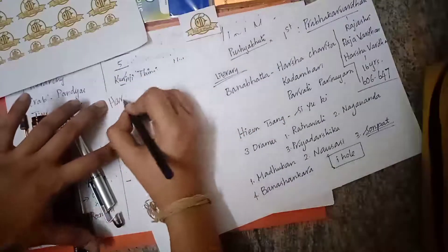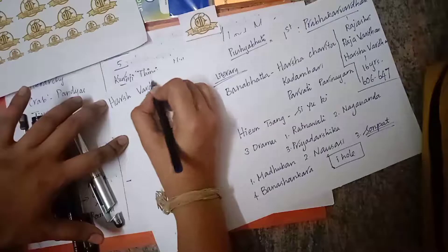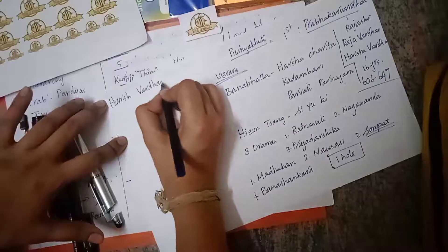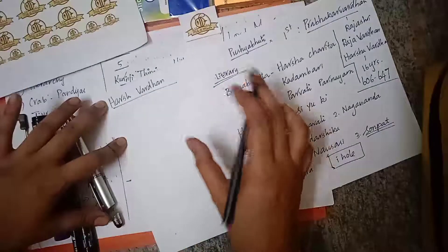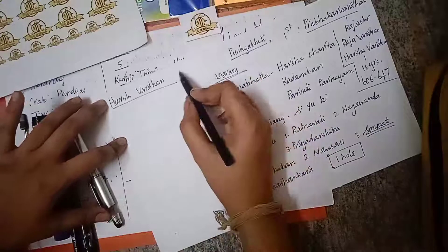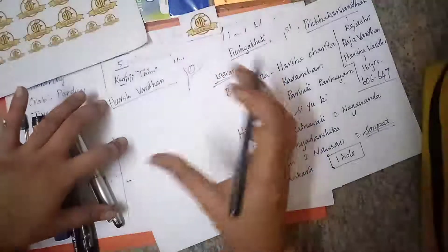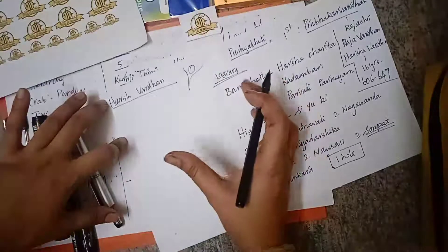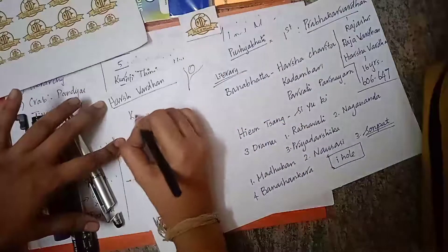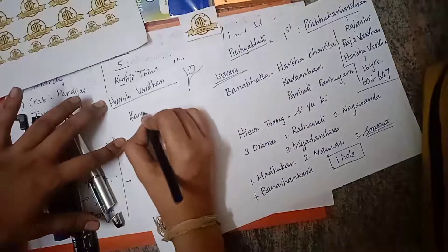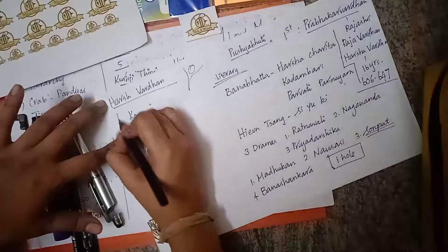Harshavardhan captured Kanoj, which is a very fertile region. Kanoj has a Doab — a land area between two rivers — making it the most fertile region. Kanoj was captured by Harshavardhan from the Bengal ruler Shashanka.